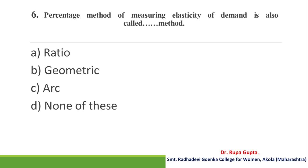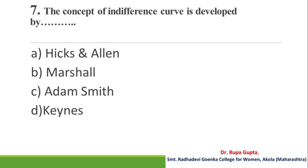Question number 6: Percentage method of measuring elasticity of demand is also called dash method. A. Ratio, B. Geometric, C. Arc, D. None of these. And the answer is A, Ratio.